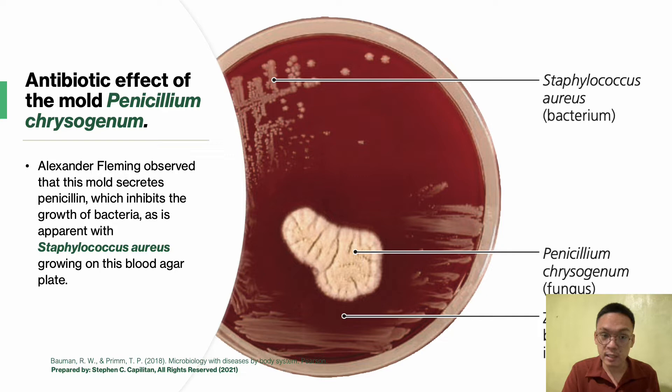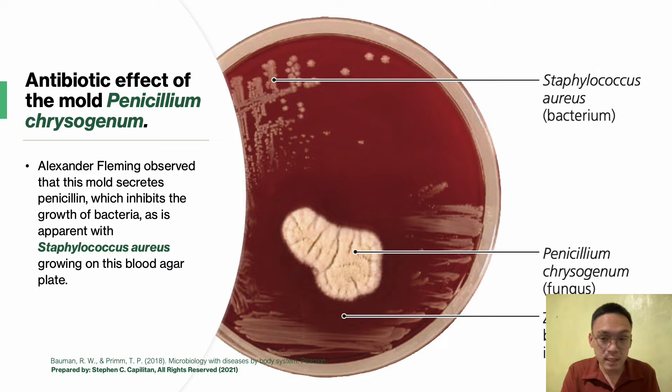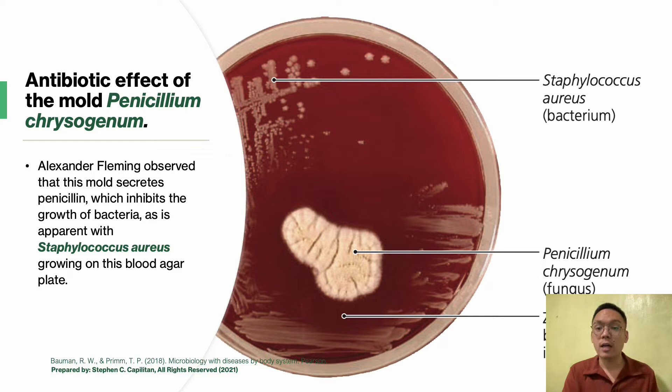This image shows the antibiotic effect of the mold Penicillium chrysogenum. Alexander Fleming observed that this mold secretes penicillin, which inhibits the growth of bacteria — specifically Staphylococcus aureus growing on a blood agar plate. You can see the zone of inhibition where the area has been cleared. In 1928, this British bacteriologist Alexander Fleming identified the antibiotic effect of penicillin produced by Penicillium.